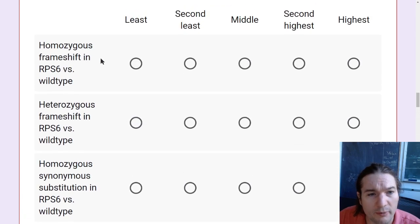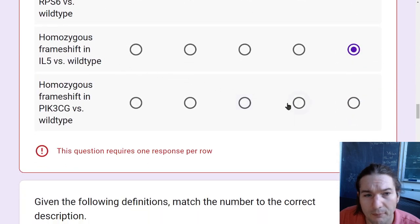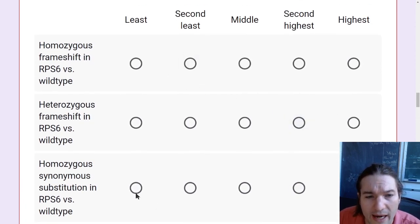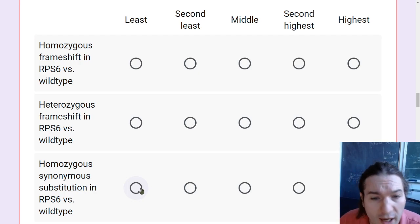The rest of these are all RPS6. So this kind of middle one is going to be our second highest. And now we need to just rank these three of the same thing. So a homozygous synonymous mutation in RPS6 is going to, if it's a protein coding gene, which I don't actually know personally, you could look up, but if it's a protein coding gene, shouldn't have any effect because it is synonymous.